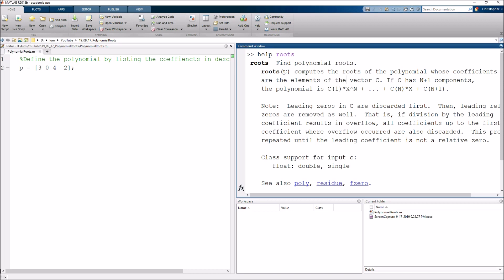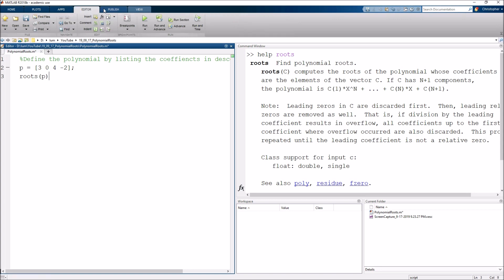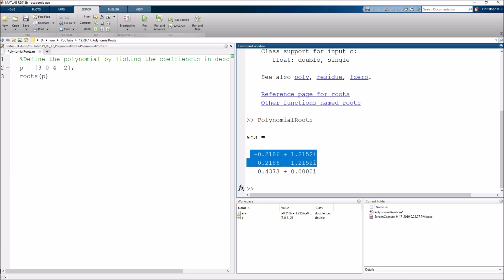It computes the roots of the polynomial of this array P. So all I need to do here is just say roots of P, and if we go ahead and run this script, we should basically get here's our roots. So as we see we got that here's our one real root here at about 0.437, and then we have two imaginary roots.